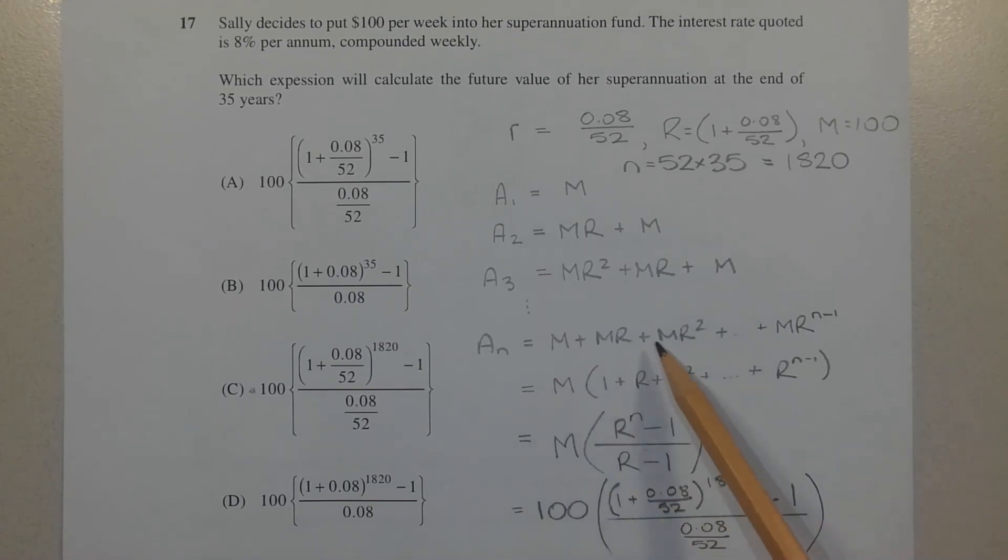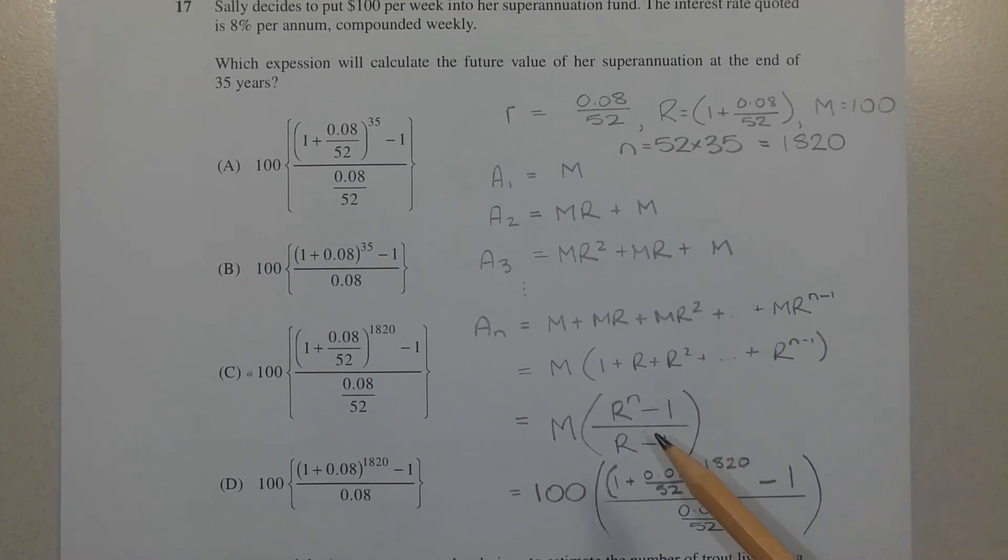Factorizing out M on the right hand side, we get AN equals capital M times (1 plus R plus R squared plus dot dot dot plus R to the power of N minus 1). What's in brackets is a geometric series where the first term is 1 and the common ratio is capital R.